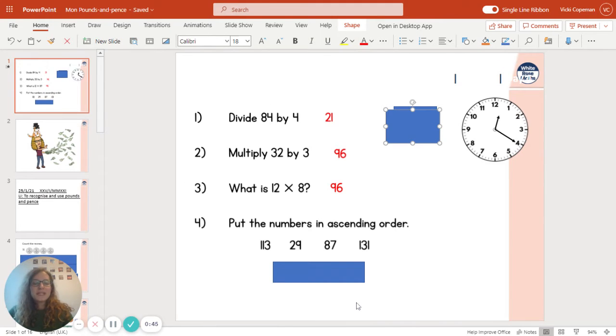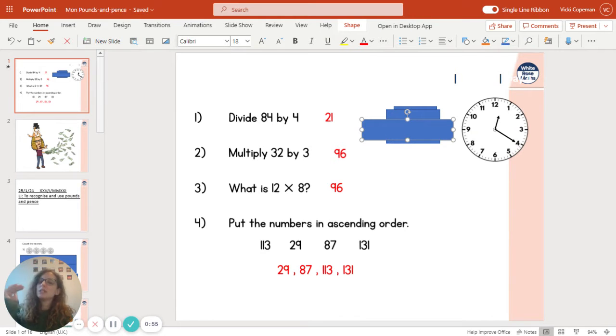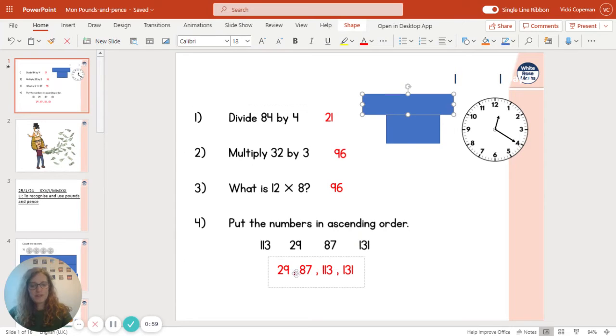Put the numbers into ascending order. Okay, so we need to look. So we're getting bigger, like you're ascending up a mountain, you're getting bigger. So that's the order you should have them: 29, 87, 113 and 131.